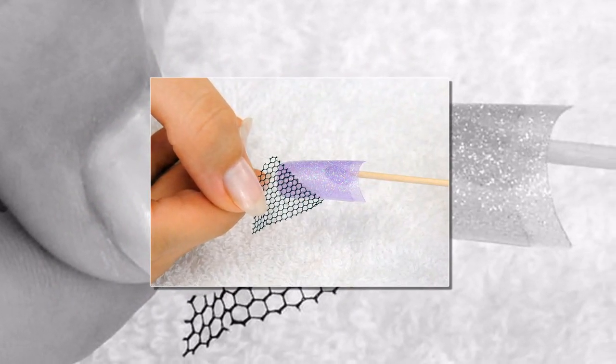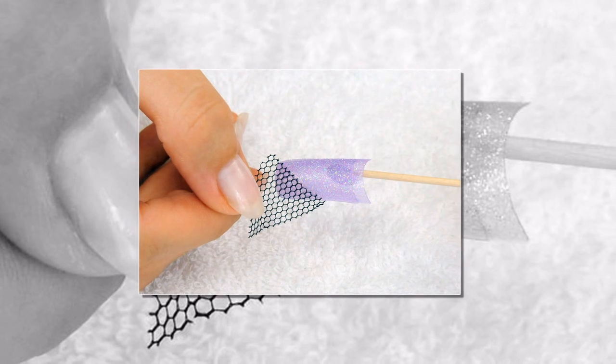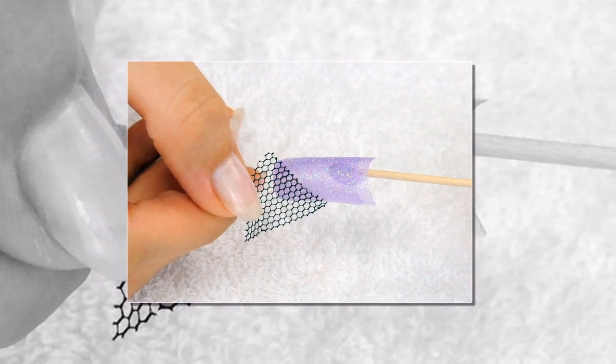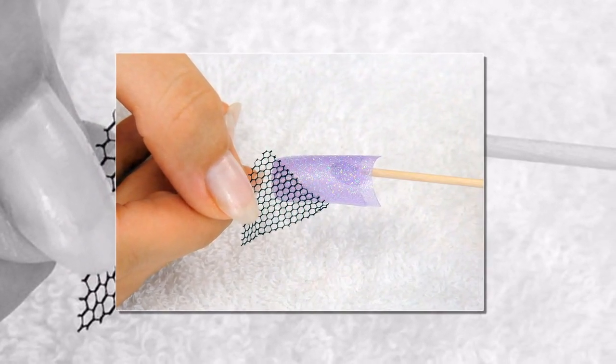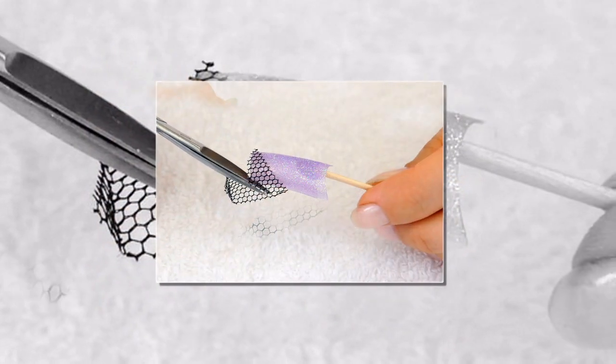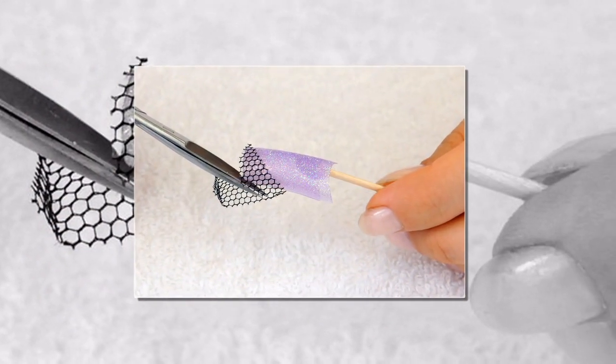Step 3: At this point it is safe to gingerly cut away the excess fabric. Step 4: Now simply repeat this process on the opposite corner of the nail.